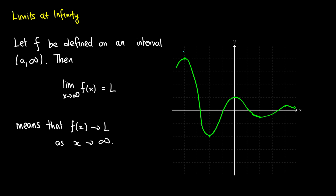It starts out at y equals 4. We move over a couple points on the x-axis — we get to negative 2, then to 1, then to negative 0.5, then to positive 0.25. As you can imagine, every two values of x we're going to get closer and closer to 0, swapping between positive and negative values.